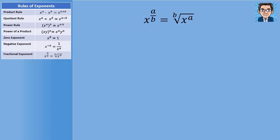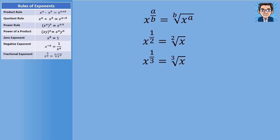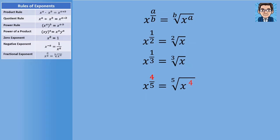The last rule addresses what to do when we have x raised to a fraction. The numerator is going to be the power and the denominator is going to be the root. So x to the 1/2 is the square root of x, and x to the 1/3 is the cube root of x. Once we get a numerator other than 1, there are two different things we can do: we can put the numerator inside as the power — the 5th root of x to the 4th — or we can take the 5th root of x and raise the whole thing to the 4th. Both forms are useful depending on whether we're evaluating or simplifying.